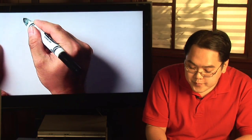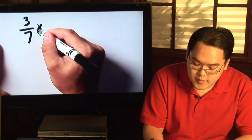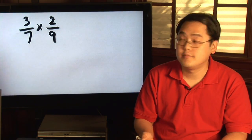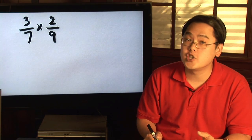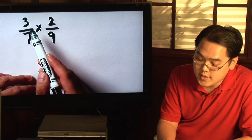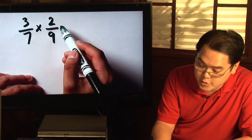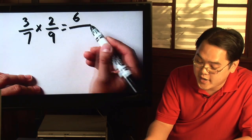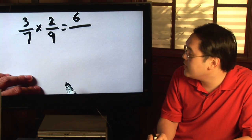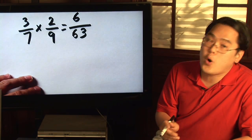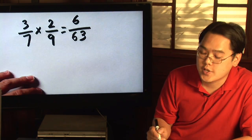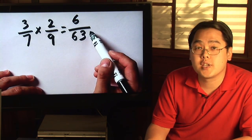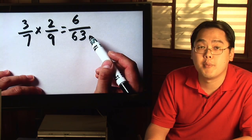Suppose you have 3 sevenths multiplied by 2 ninths. With multiplication of fractions, you literally just multiply across — take the 3 and multiply it with the 2. 3 times 2 is going to be 6, divided by 7 times 9, which you know is 63. The only thing you may have to consider after you multiply fractions is to reduce. Can you reduce 6 over 63? After some thought, you'll see that 6 over 63 can both be divided by 3.